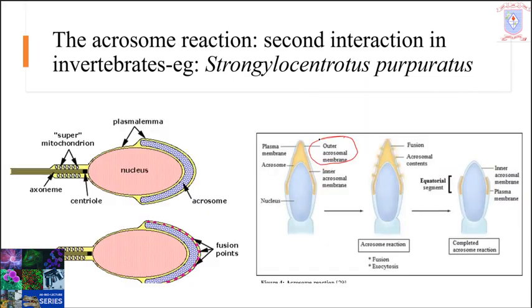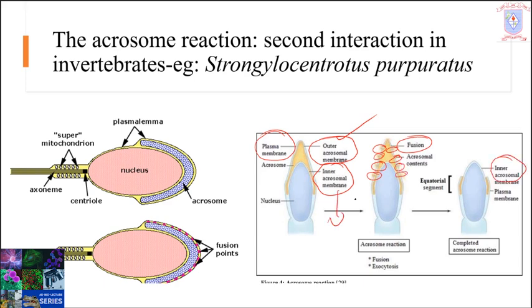The acrosome has two layers: the outer acrosomal membrane and the inner acrosomal membrane. During the acrosomal reaction, the outer acrosomal membrane and the plasma membrane of the sperm fuse at multiple sites. Here you can see the multiple-site fusion between the outer acrosomal membrane and the plasma membrane. As a result, the inner acrosomal membrane gets exposed outside, specialized for fusion with the egg.